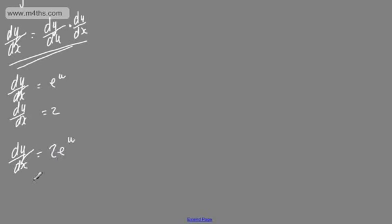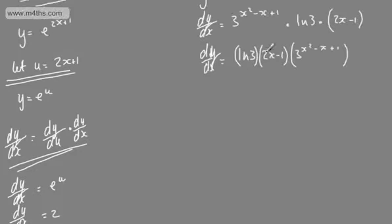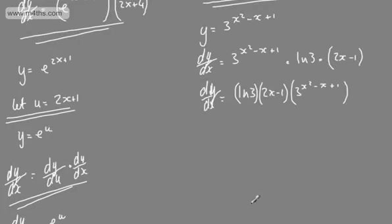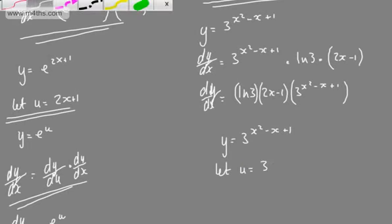Now we know that u is 2x plus 1, so we can just substitute that back in to get 2e to the 2x plus 1. As you can see, that's a long-winded way, but if you wanted a more formal approach, that's what you would get. Now exactly the same would happen for the other example. If we took y is equal to 3 to the power of x squared minus x plus 1, we would say: let u be equal to the inside function.